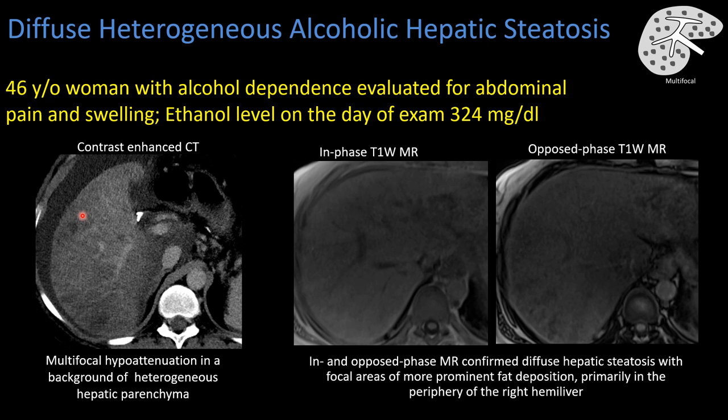The liver overall is decreased in attenuation relative to the spleen, with even more focal areas of hypodensity in the hepatic parenchyma. When we look at this same patient on MRI, we see diffuse steatosis but in addition these nodular, irregular patchy areas of more severe steatosis superimposed on that background of diffuse steatosis.